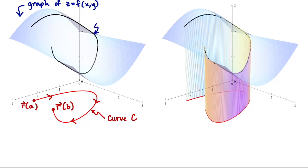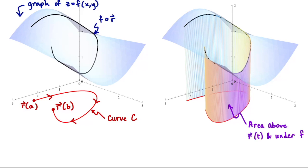So every point on that curve has the form x, y, f of x and y, where the x and y coordinates come from the curve. The area over the curve and under the graph of this function is this area I've pictured over here on the right. This area is one thing that we can compute with a scalar line integral, so I might refer to it as a curtain area or something like that.